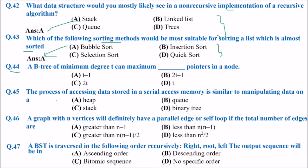A B-tree of minimum degree T can have a maximum of how many pointers in a node? The answer is 2T. A B-tree with minimum degree T can have maximum 2T pointers in a node.